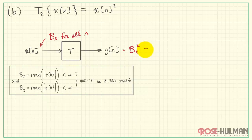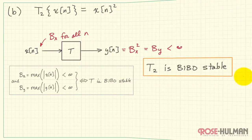We know that our output then would be BX squared. That value is our bound on Y, B sub Y. Squaring a finite result still gives us a finite result. Therefore, T2 is also BIBO stable.